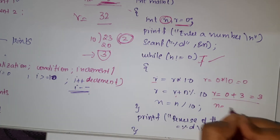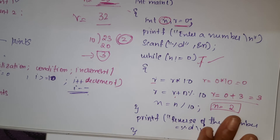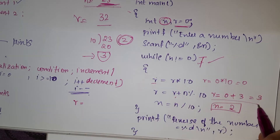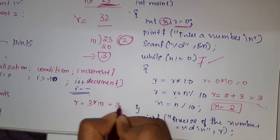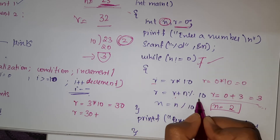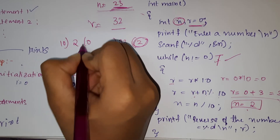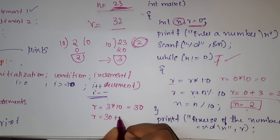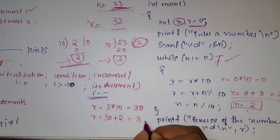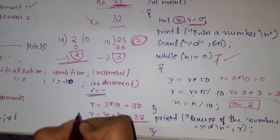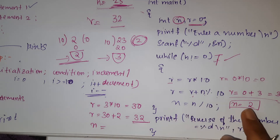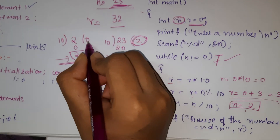Now current value of n is 2. We go back to the loop. r equals r star 10: current r is 3, so 3 star 10 equals 30. Then r equals 30 plus n percent 10. Current n is 2, so 2 percent 10 gives remainder 2. So r equals 30 plus 2 equals 32. We got the reverse number 32. Then n equals n divided by 10: 2 divided by 10 gives quotient 0, so n becomes 0.